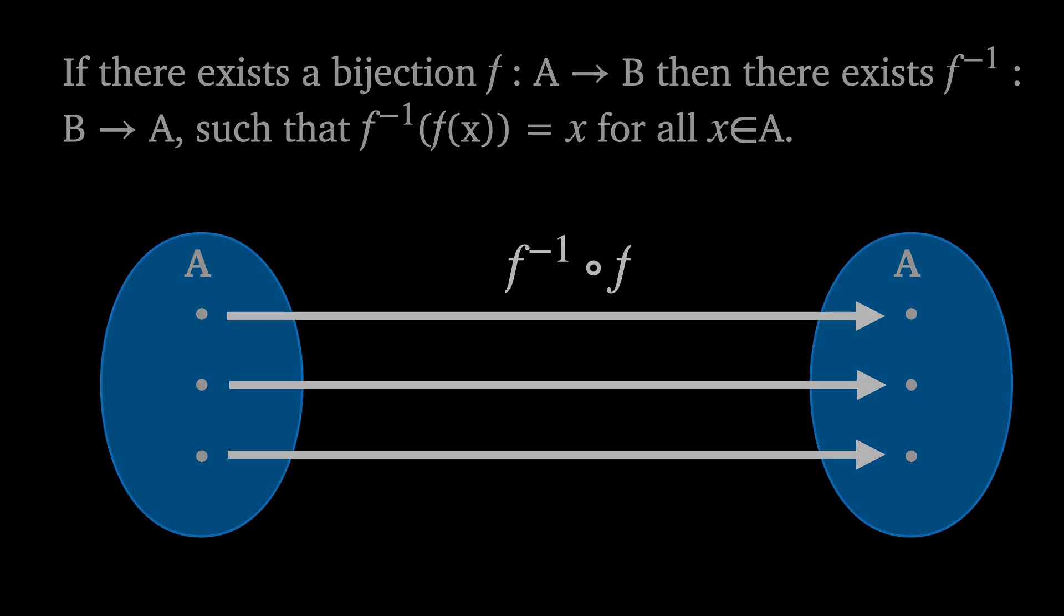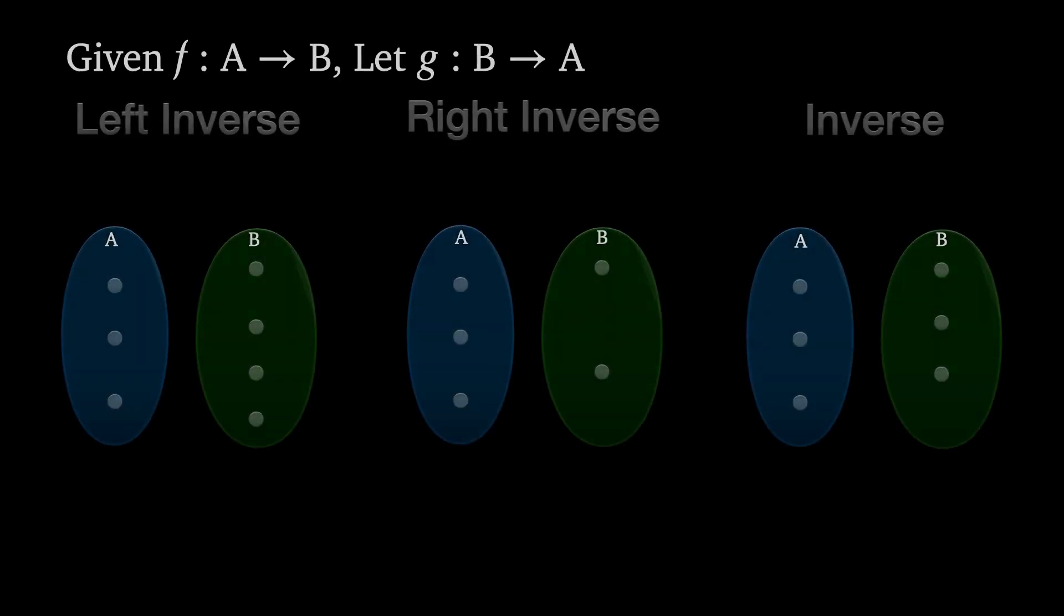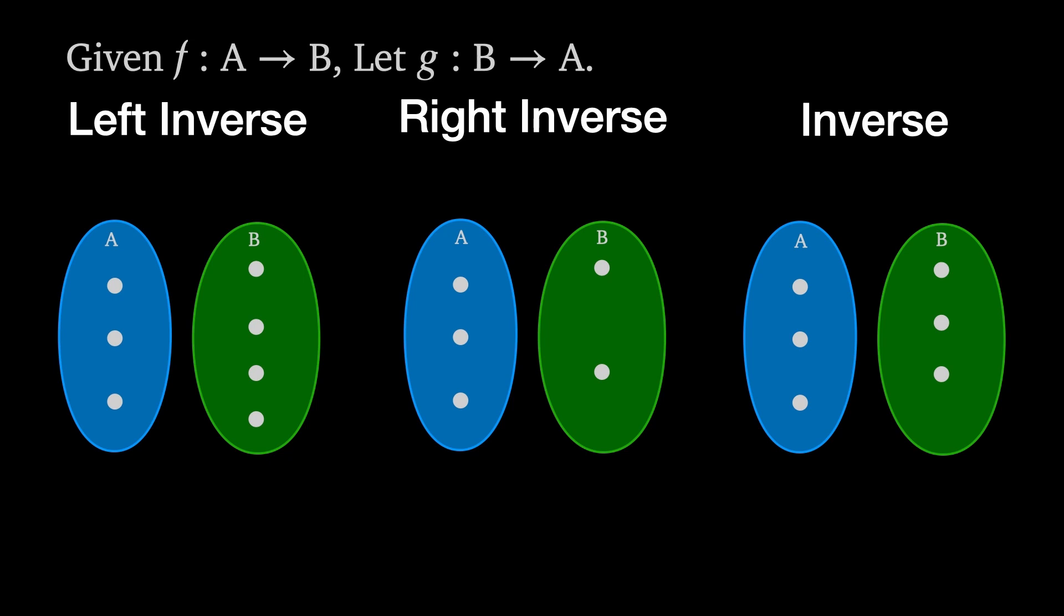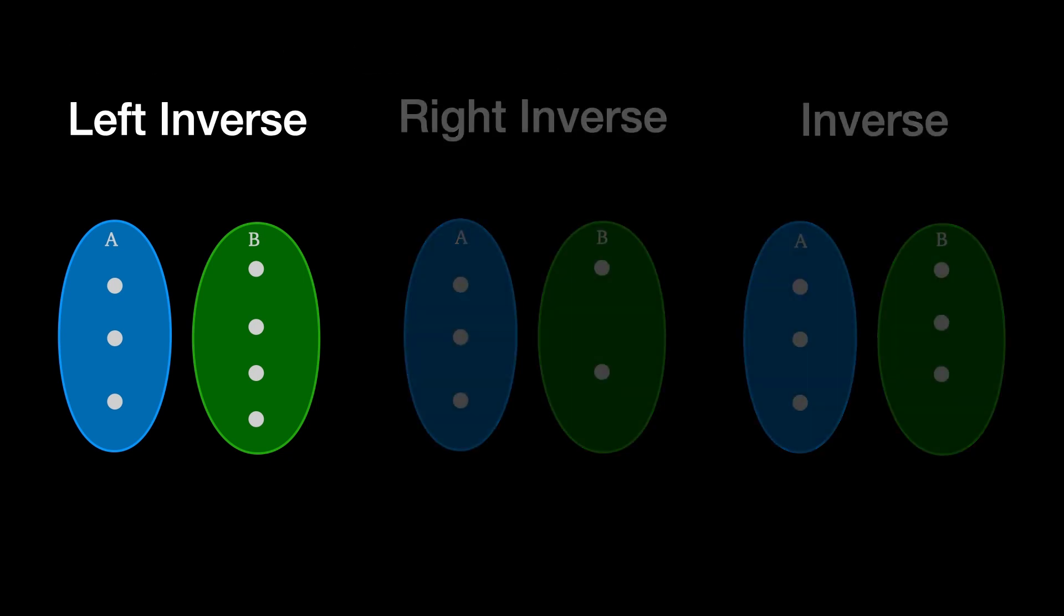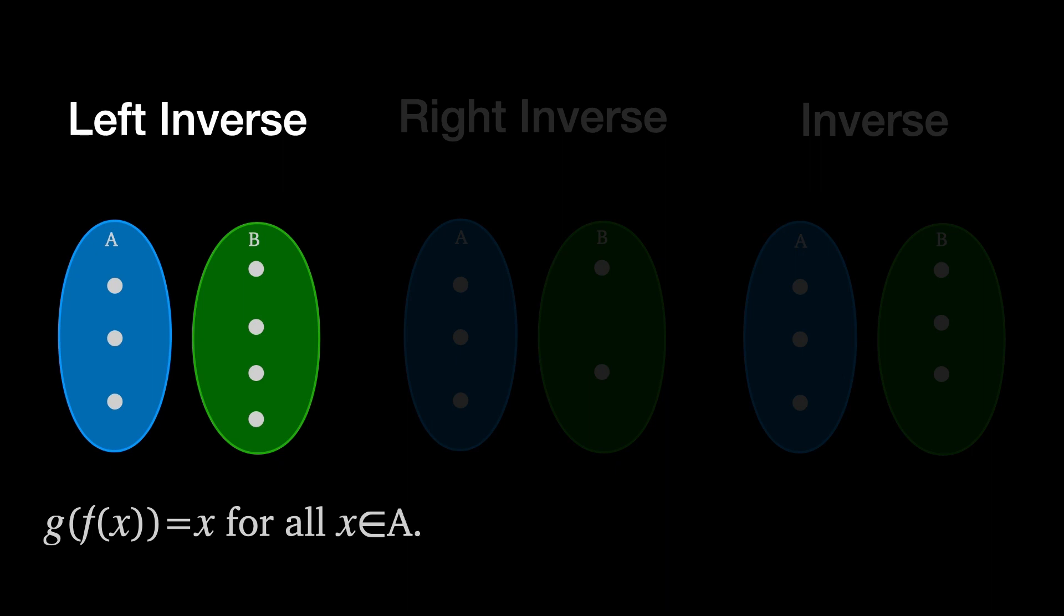Let's look a little bit more closely at the link between bijections and inverse functions by sketching out a proof that if a function has an inverse, it must be bijective. Let f be a function from A to B, and g be a function from B to A. g is what we call a left inverse of f if g(f) maps every x in A to itself. That is, we apply f first, then g, and we end up back where we started.